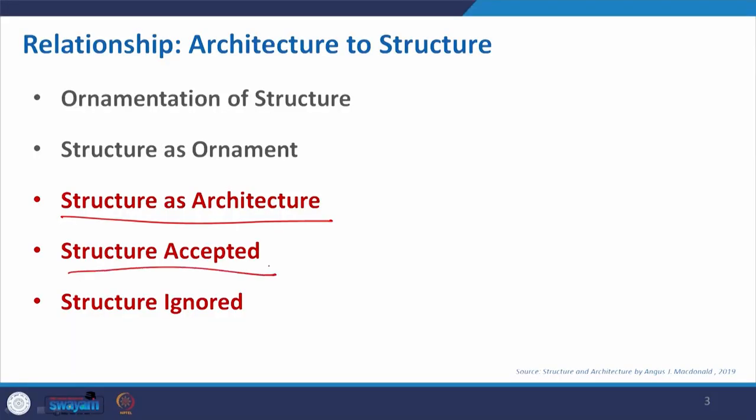To briefly revisit: it basically depends on the architect or designer — how he or she will approach the structural and architectural outcome. Sometimes we see the dominance of architectural form, sometimes the dominance of structure, and sometimes there is an ignorance of the typical structural arrangement, which can be a simplistic solution but creates something different and interesting. Here we will discuss three concepts: structure as architecture, structure accepted in architecture, and structure ignored in architecture in form making.